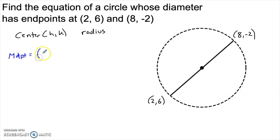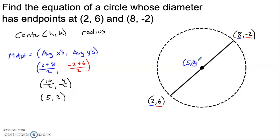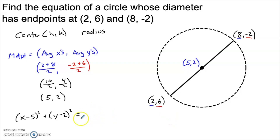Since the midpoint is always at the average of the x-coordinates and the average of the y-coordinates, the center is the average of 2 and 8 for x, and the average of -2 and 6 for y. That gives a center at (5, 2). Once we know the center, the equation is (x - 5) squared plus (y - 2) squared equals r squared — we just don't know the radius yet.